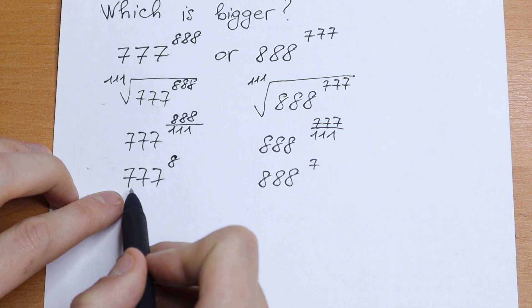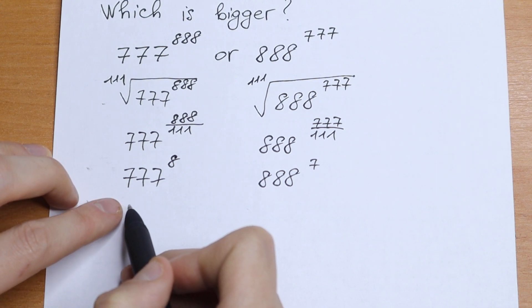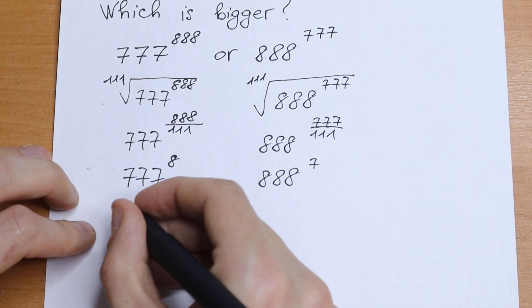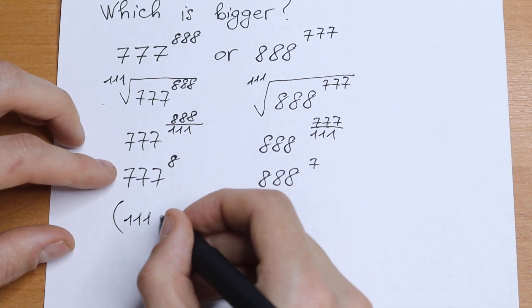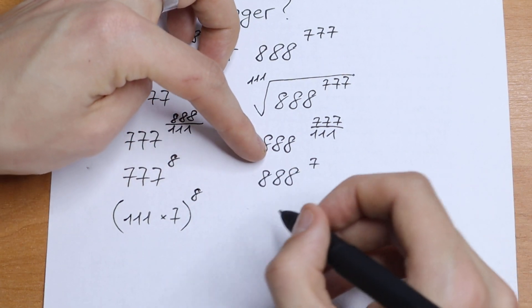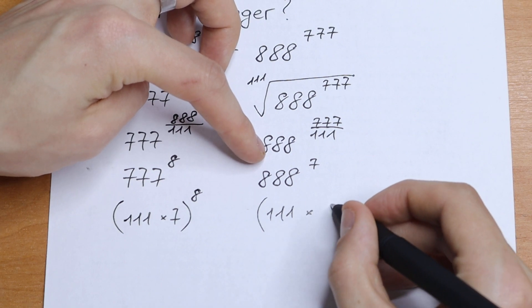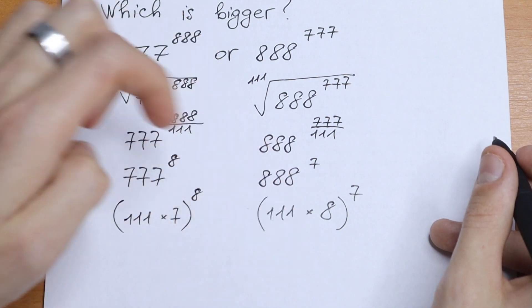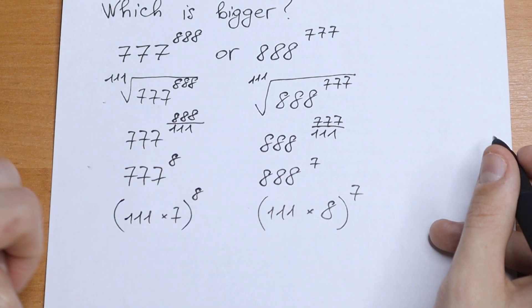We can write 777 as 7 times 111, and 888 as 8 times 111. So let's write 777 as 111 times 7, to the power 8, and on the right 111 times 8, to the power 7. Just express these elements as 111 times these numbers.